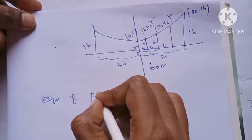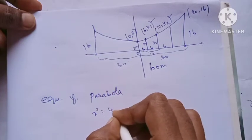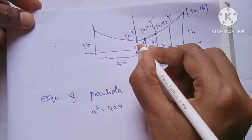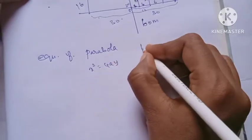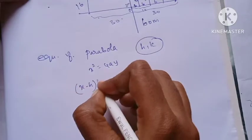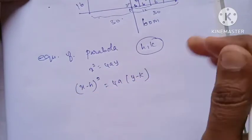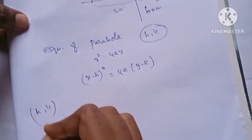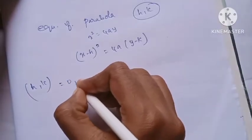Now we find the equation of the parabola. The standard form is x squared equals 4ay. But the center here is at (0, 3), so we use the shifted form: x minus h whole square equals 4a into y minus k. The vertex (h, k) is (0, 3).